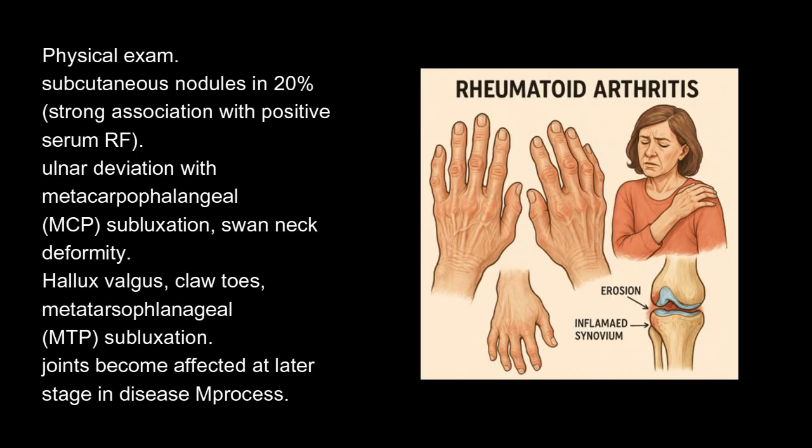On physical exam, subcutaneous nodules are present in 20% of patients, with a strong association with positive serum RF. Ulnar deviation with metacarpophalangeal (MCP) subluxation and swan neck deformity are characteristic. In the foot, hallux valgus, claw toes, and metatarsophalangeal (MTP) subluxation are seen.